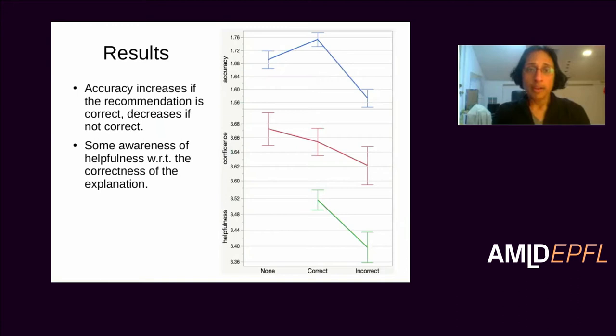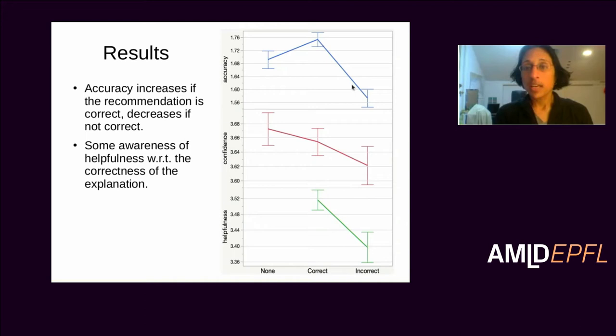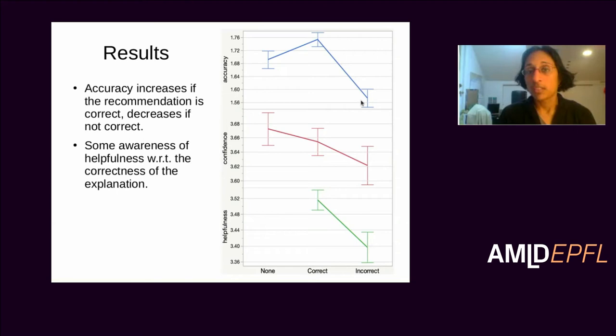Here's what we found. First, if we give no recommendation, here's our base level of accuracy. When our recommendations are correct, accuracy goes up. But when system recommendations are incorrect, accuracy goes down — meaning clinicians in the moment aren't picking up on the fact that there was an incorrect recommendation. They go with the bad recommendation, decreasing their accuracy. There's some decrease in confidence and perceived helpfulness as well, but whatever misgivings people had, it still affects the accuracy negatively.